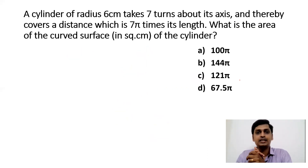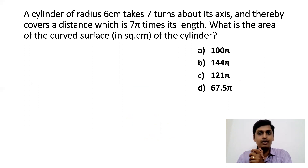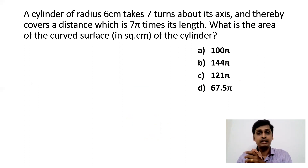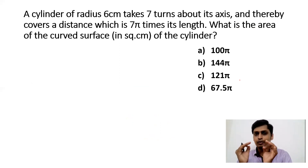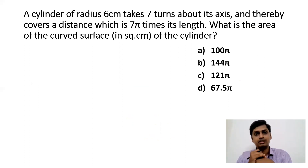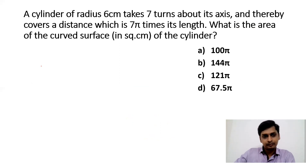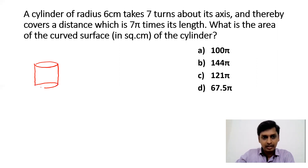Question three: a cylinder of radius 6 cm takes 7 turns about its axis and thereby covers a distance which is 7π times its length. What is the area of the curved surface in cm²? In TCS NQT you can expect at least one question from mensuration. For a cylinder, volume = πr²h and curved surface area = 2πrh.